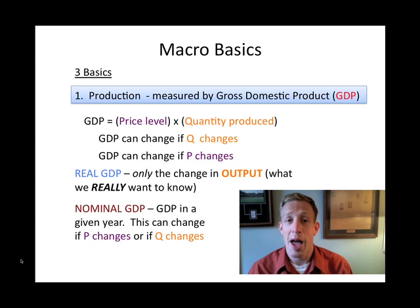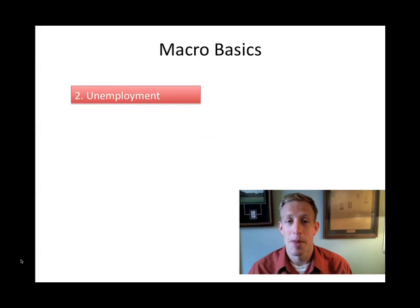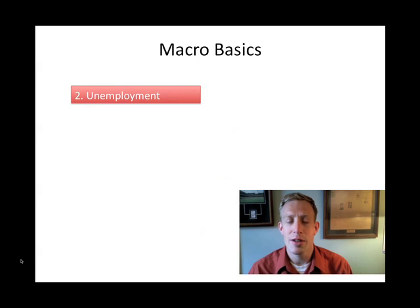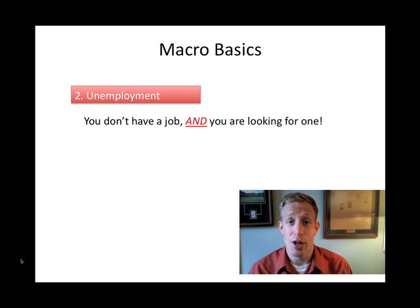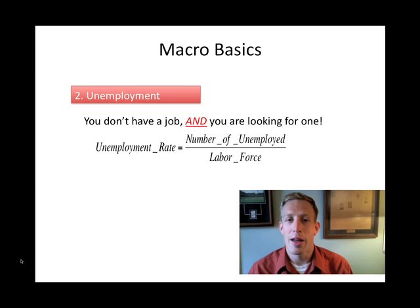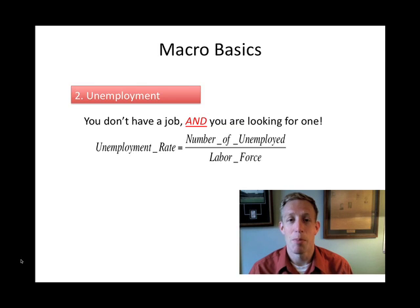The second thing in macro we want to look at is how many people are working, or more commonly known as unemployment. Unemployment is a little bit tricky because it doesn't necessarily include people who are not working. It includes people who are not working, but want to work, and are actively searching for work. Usually, the higher the levels of unemployment, the less output is being produced, so when it comes to policy decisions, unemployment is a very important thing. The unemployment rate — the number we typically hear in the news — is the number of unemployed people divided by the labor force, or the people who are actually out there working or trying to find jobs. Unemployment rates can change because there are fewer people working, or because there are fewer people looking for work, so we have to be careful about how we judge that number.